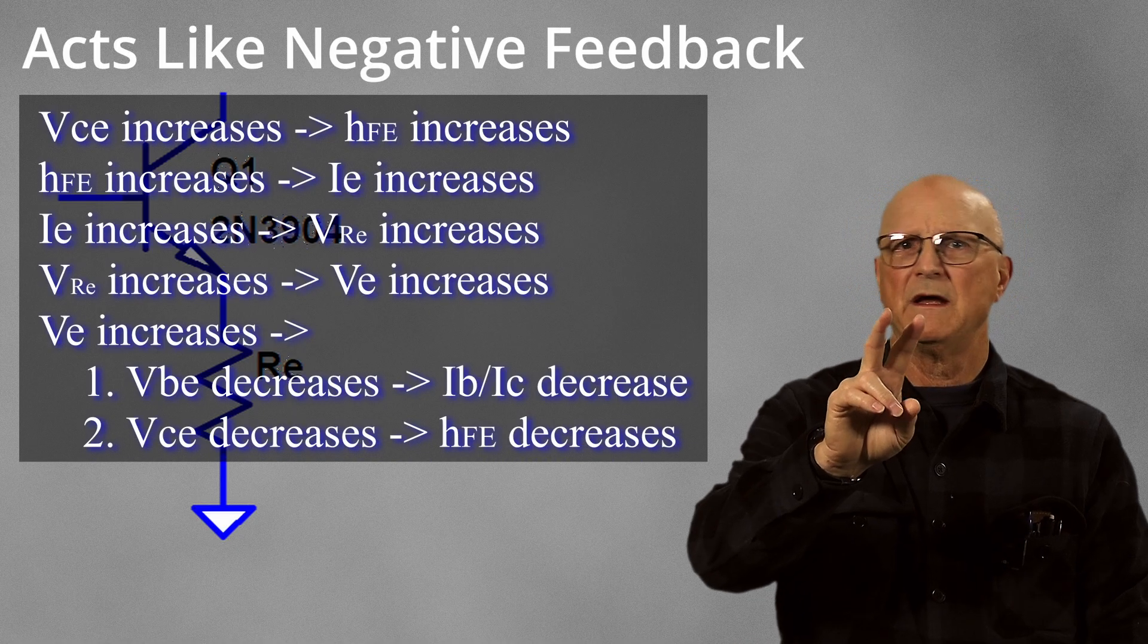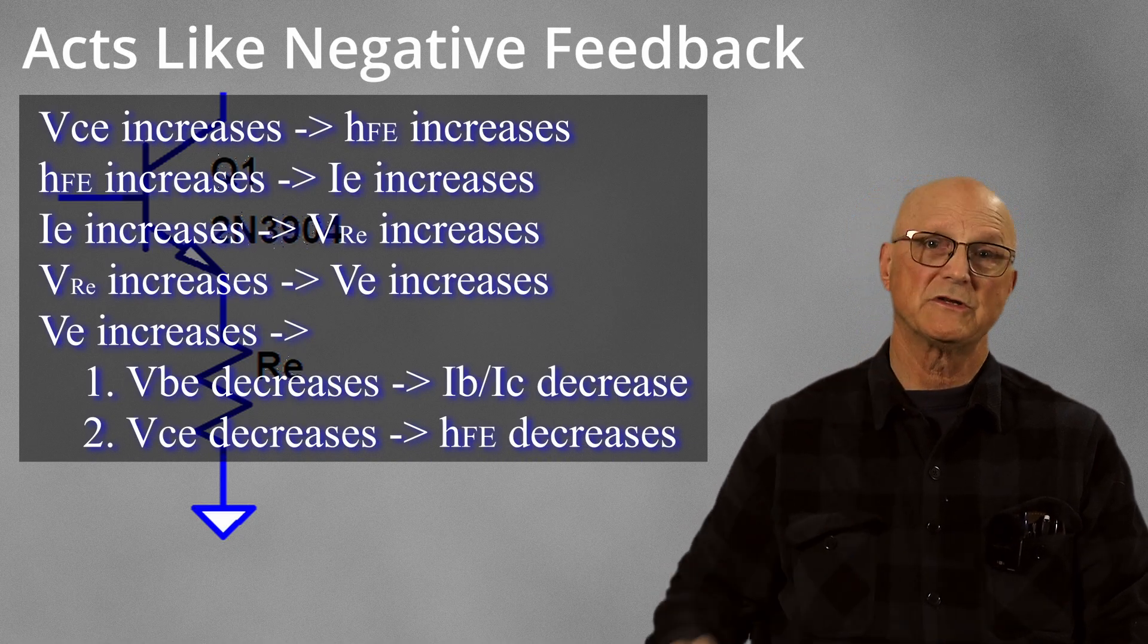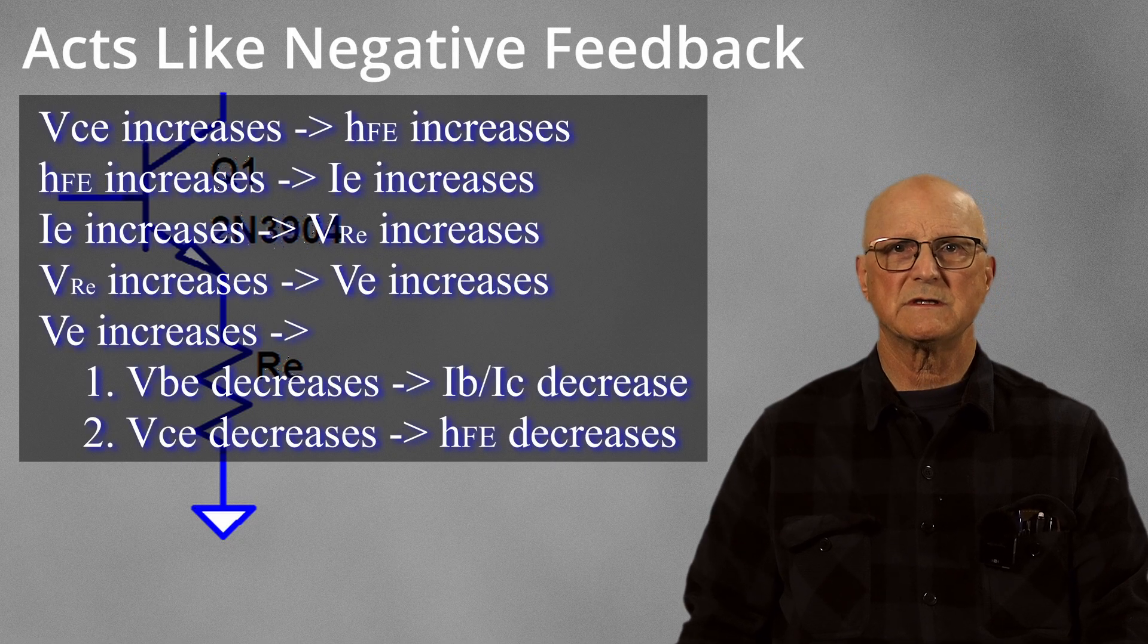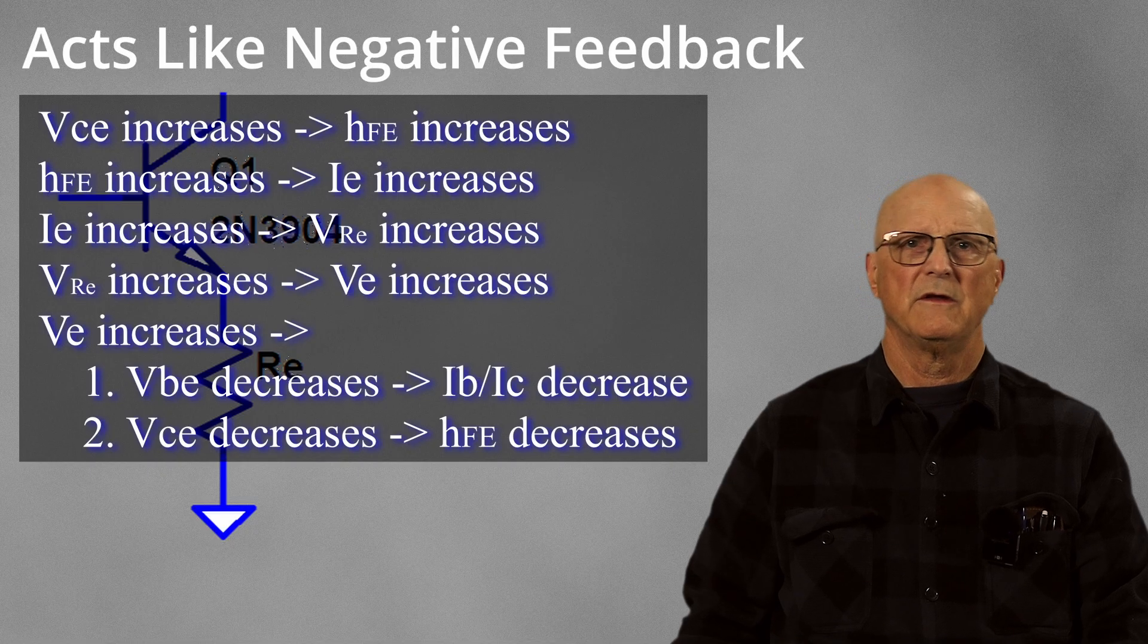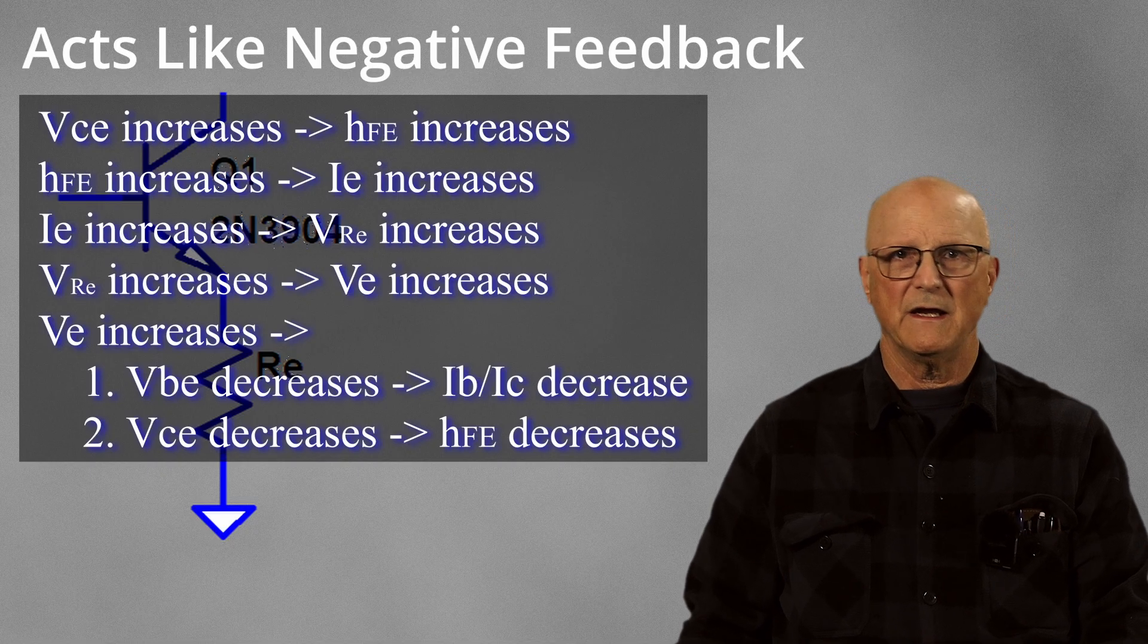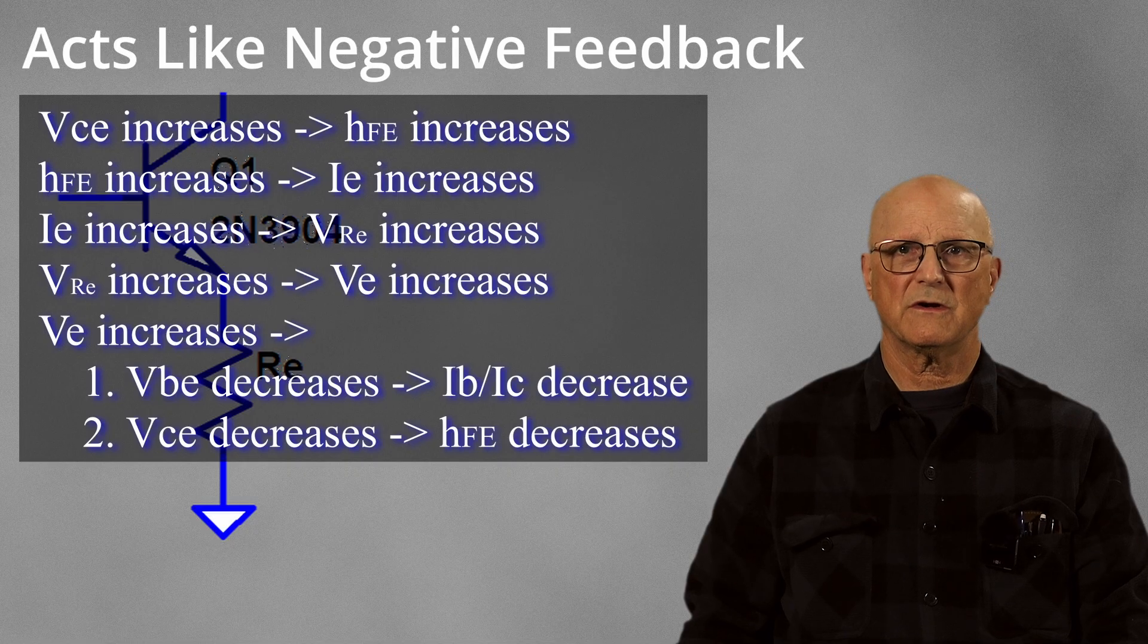Second, the collector emitter voltage also decreases, which reduces the increase in the current gain of the transistor. The overall effect of the increase in the transistor's current gain with increased collector emitter voltage is significantly reduced.